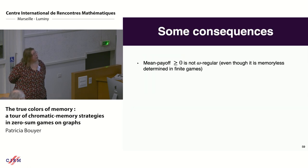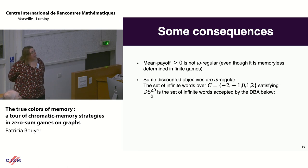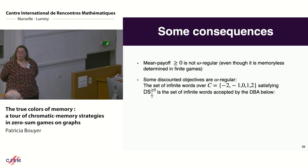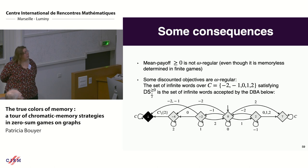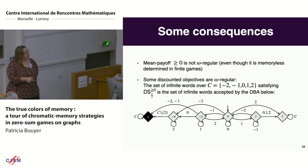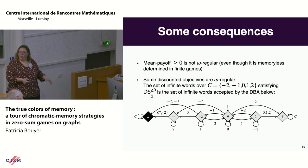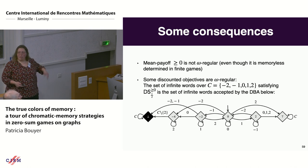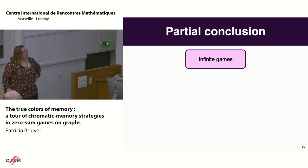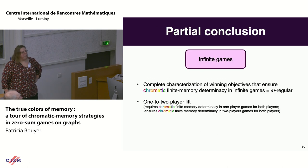We deduce that mean payoff is not omega-regular. For discounted objectives, sometimes they are omega-regular—for example with discount factor one-half and colors in {-2, ..., 2}—but otherwise not. We conclude similarly to the finite game case.